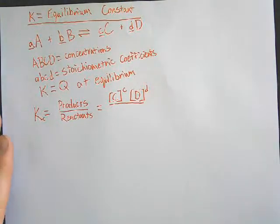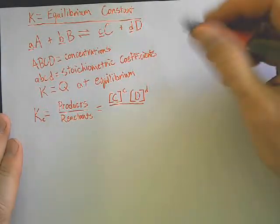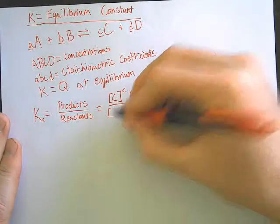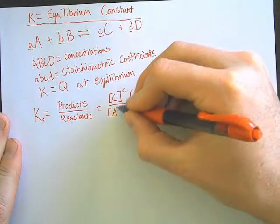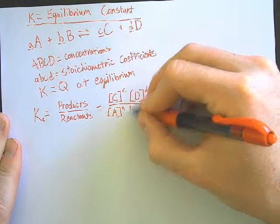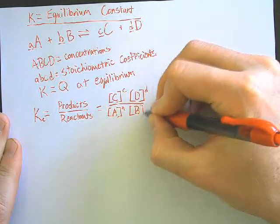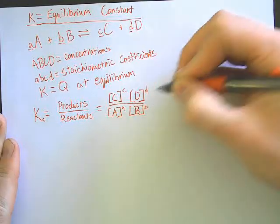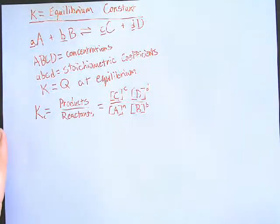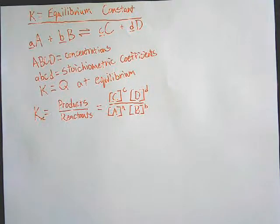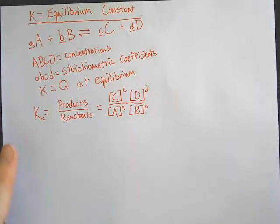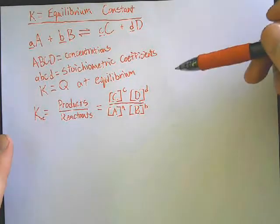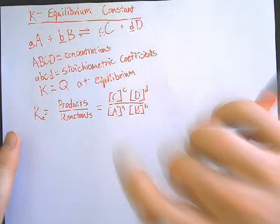If that's my products, how do you think I'm going to write my reactants? Exactly — A to the a power, B to the b power. Does everybody see where these letters came from? That first part came from the equation we wrote above.